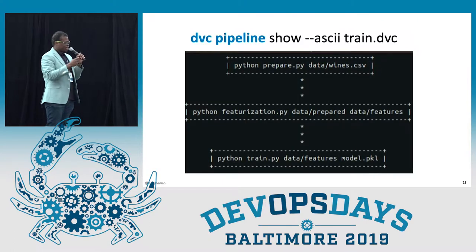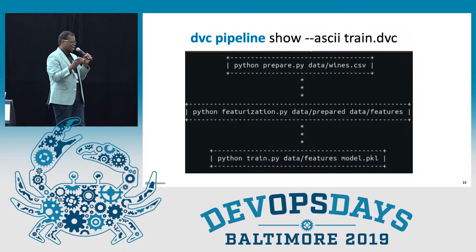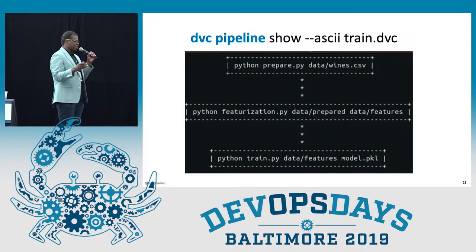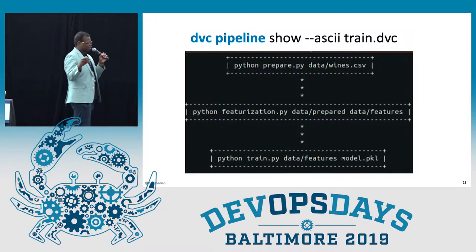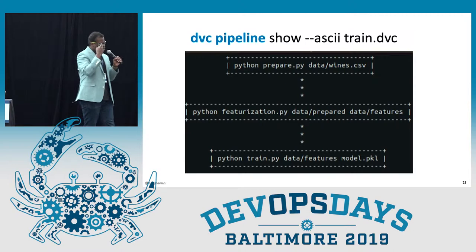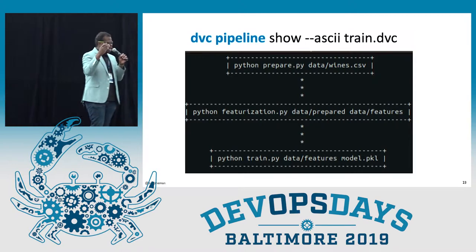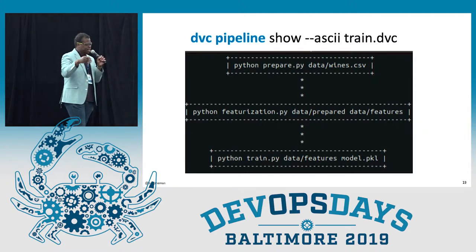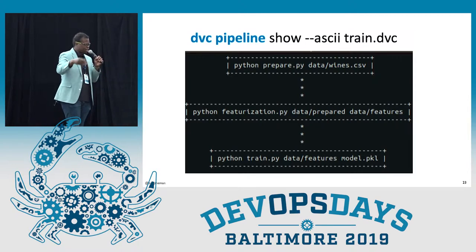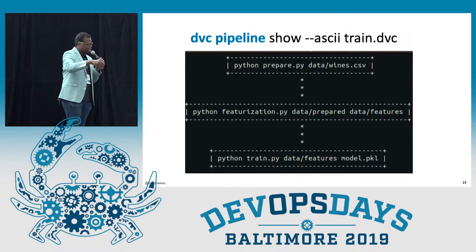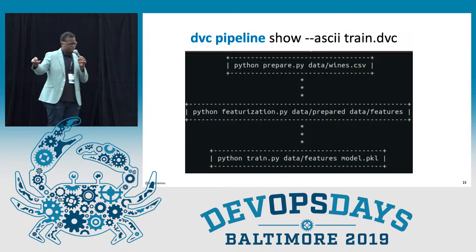DVC has a nice way to show what's actually happening. By using the pipeline show command, it allows you to see what happens at each step of your training process — you get the data, you prepare it, and then you deploy it.